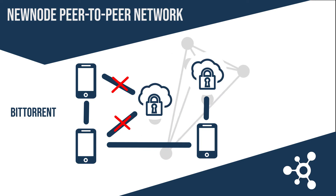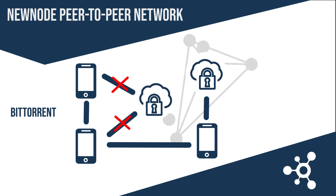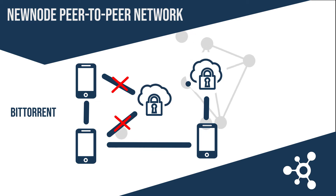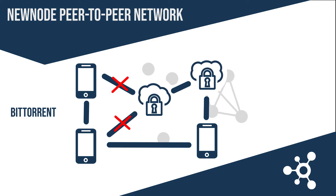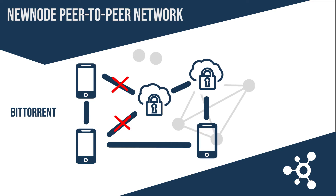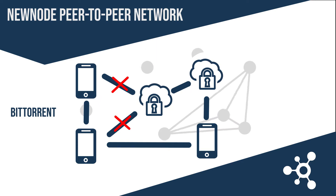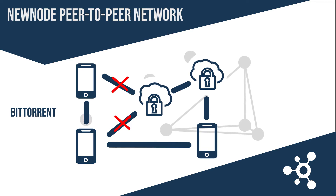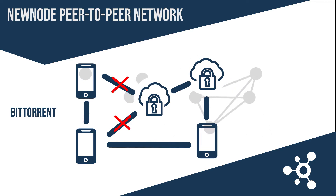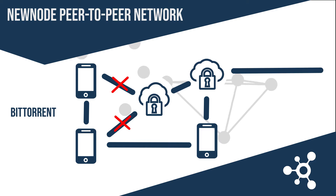One single node with a functioning connection to a cloud injector can very quickly fill the entire peer-to-peer network with the requested data, even if the cloud injectors are unavailable to other nodes due to network congestion, local failures, or regional blockages. Once the data has entered the NewNode network at any entry point — that is, once the data has reached one individual NewNode device — it quickly spreads across the entire network.